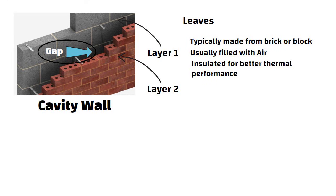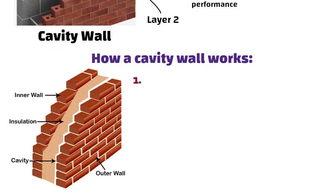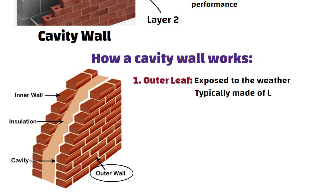Let us understand how a cavity wall works. Outer leaf: The outer layer of the wall, which is exposed to the weather, is typically made of brick or stone.